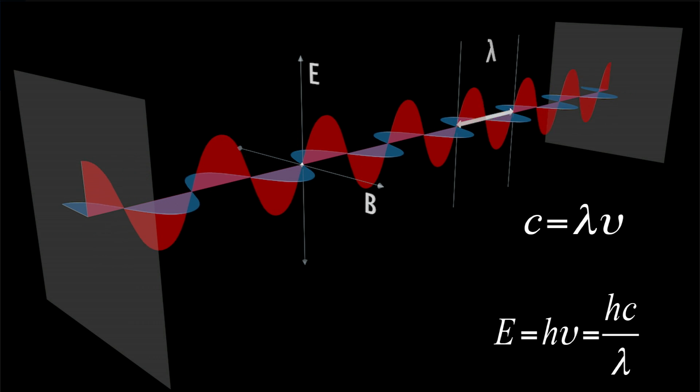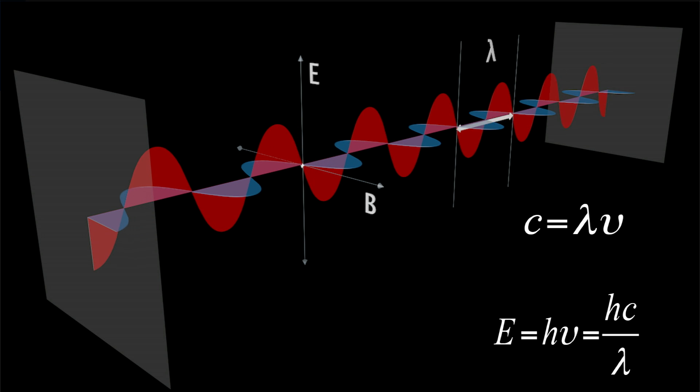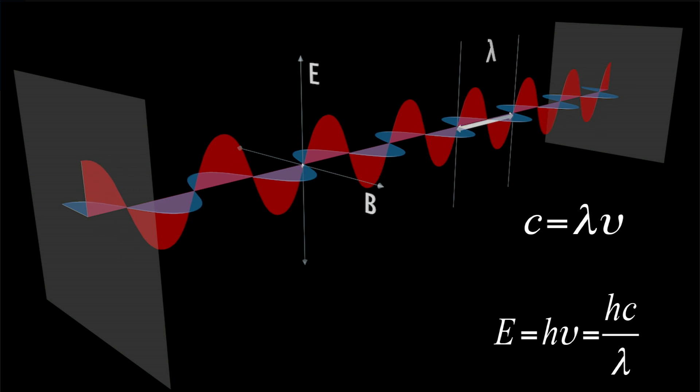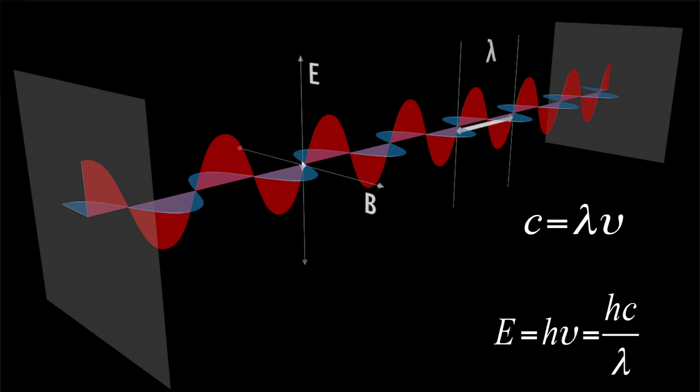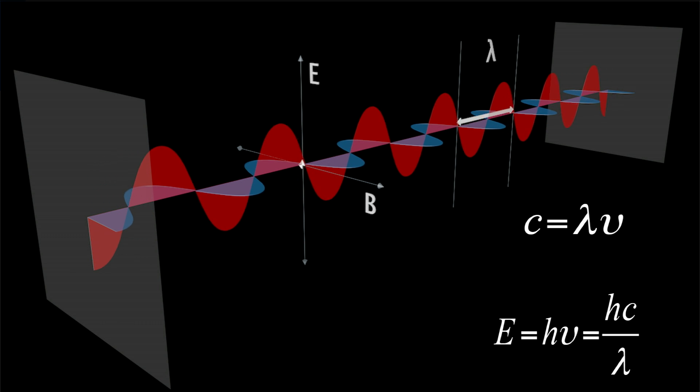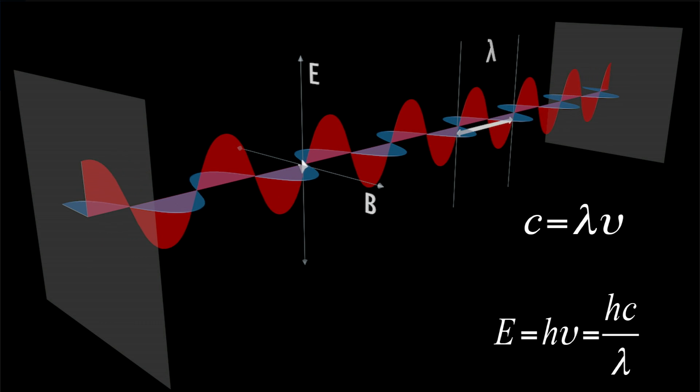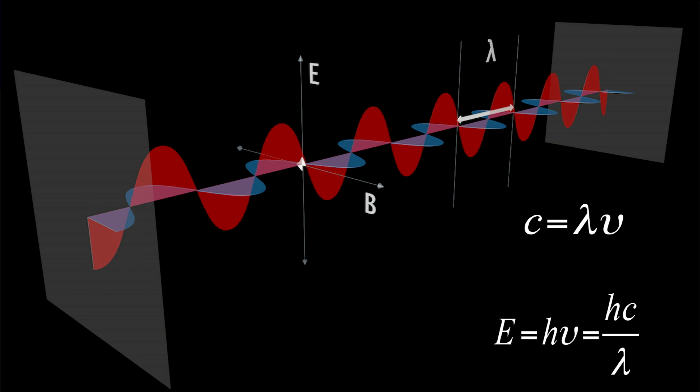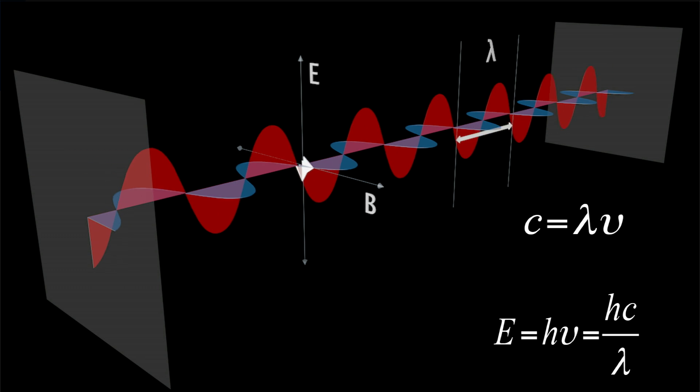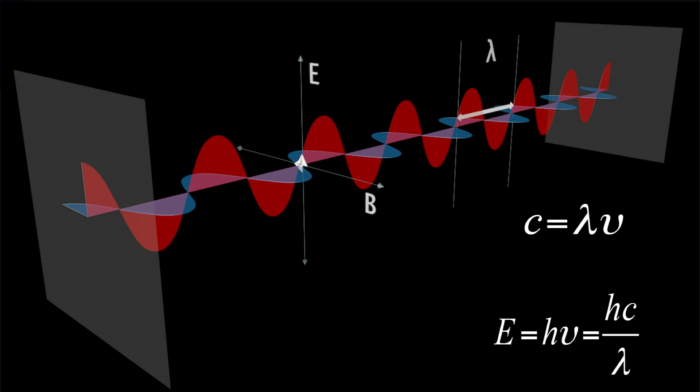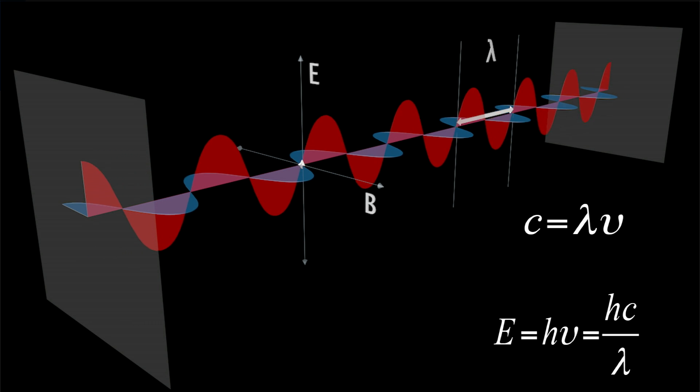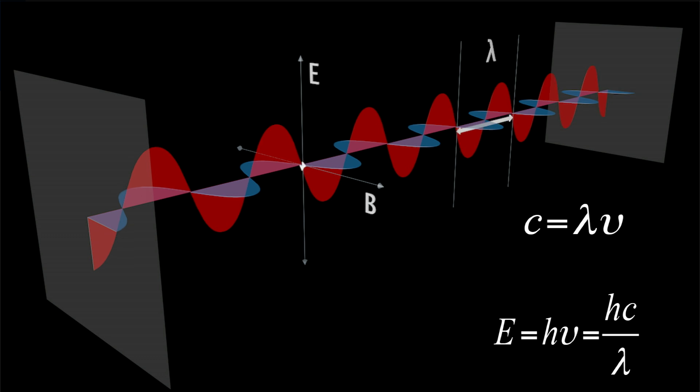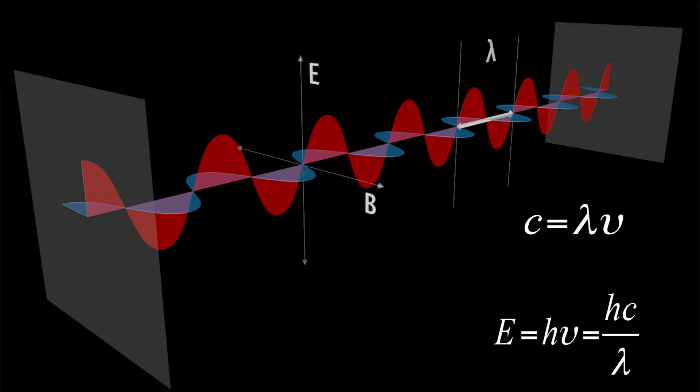The distance between the maxima of the oscillating electric field is called the wavelength, usually indicated by the symbol lambda. An electromagnetic wave is propagating with the speed of light c in vacuum. The frequency and wavelength of waves are related with a simple equation. The velocity of the wave is equal to the product of the frequency and the wavelength.